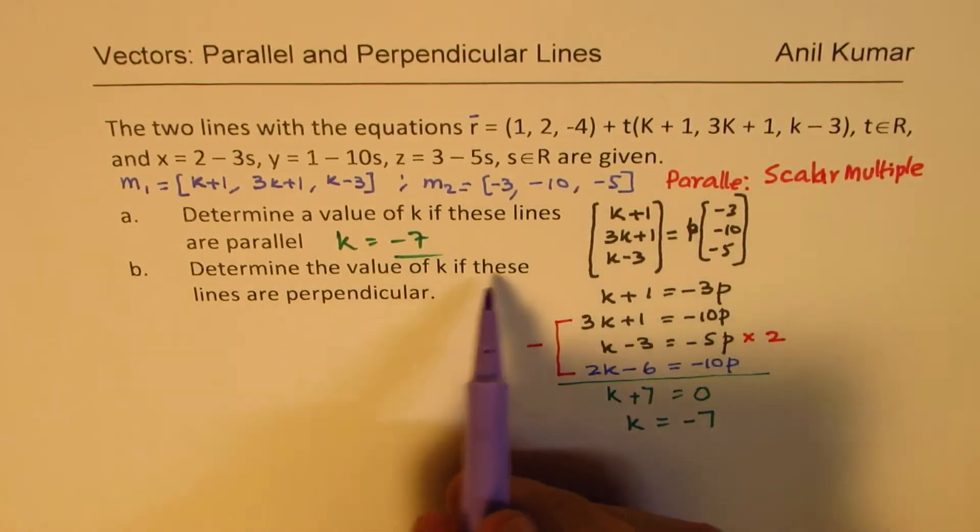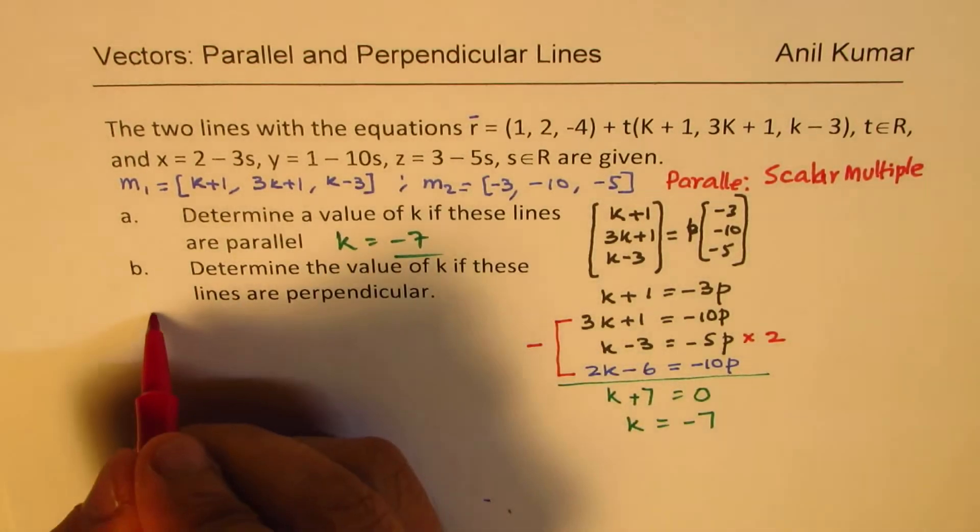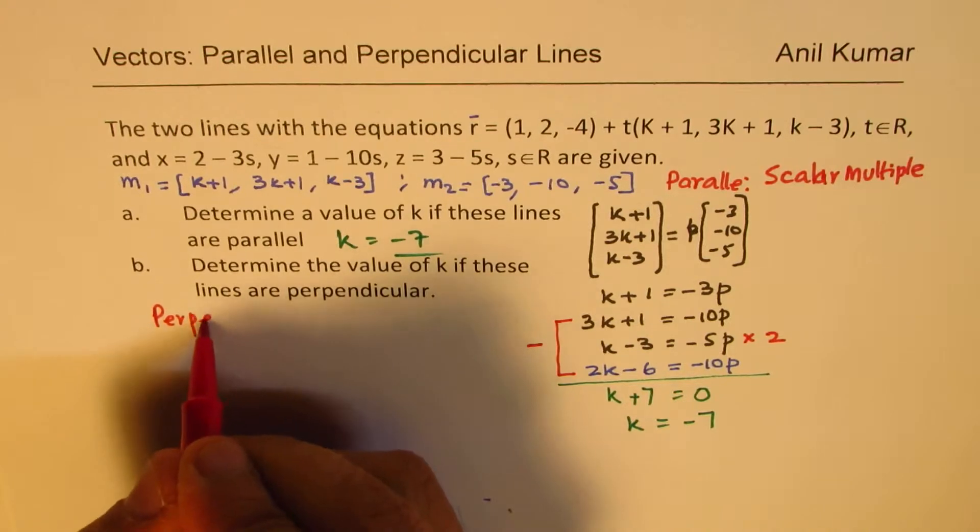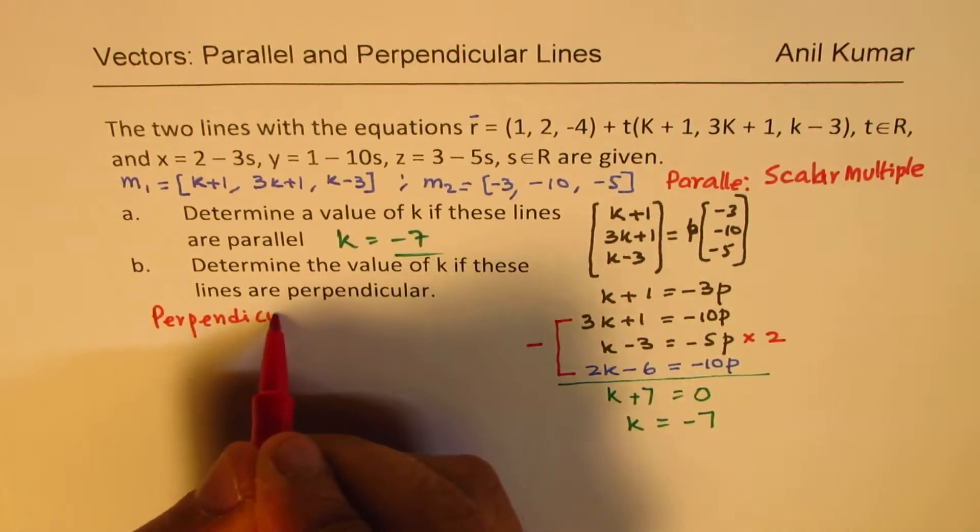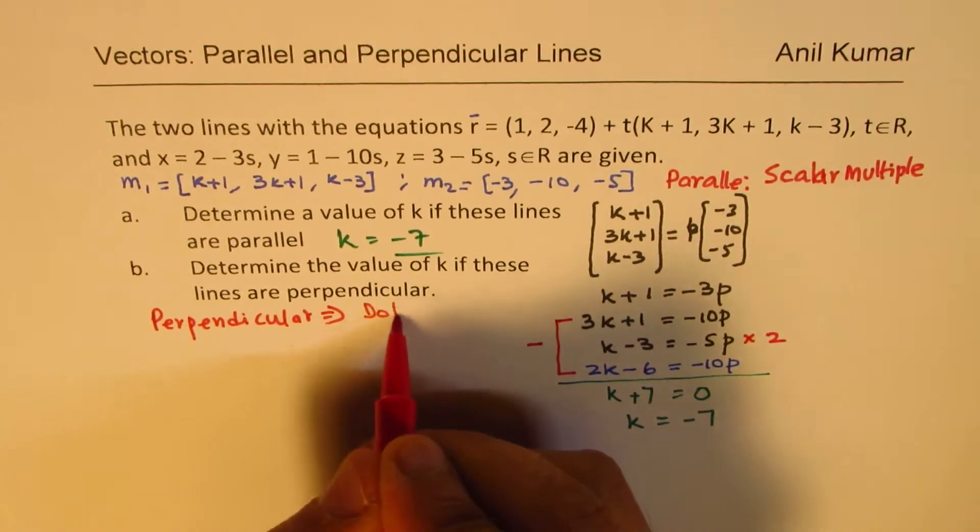Now let's do part B of this question. Part B is to find the value of k when the lines are perpendicular. When they are perpendicular, perpendicular implies that dot product is 0.